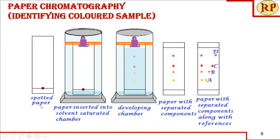Now we look into the detailed procedure. We take a specified piece of paper — a filter paper cut into a required shape and length depending on the chamber to be used for developing. First, we draw a line one or two centimeters above the bottom of the paper. We should use a pencil, not a pen, because the ink in a pen may dissolve in the solvent.